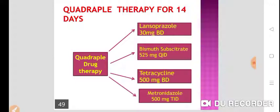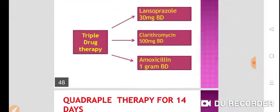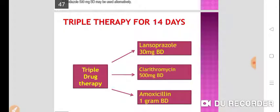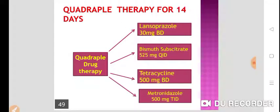If you use a single antibiotic, there is a chance of developing resistance, so it is better to use 2 antibiotics at a time that are effective against H. pylori. These are mostly 2-week, i.e., 14-day regimens — either triple or quadruple therapy. In quadruple therapy for 14 days, you use lansoprazole 30 mg twice daily, bismuth subcitrate 525 mg four times daily, tetracycline 500 mg twice daily, and metronidazole 500 mg thrice daily. You can also use tinidazole instead of metronidazole.